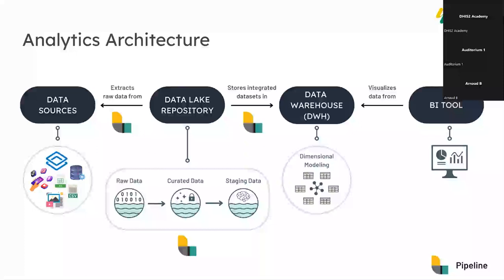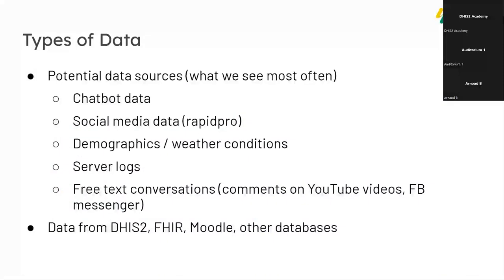The data warehouse — often called DWH — is populated through a pipeline and provides structure for the data, usually through dimensional data modeling. Once data is modeled in the DWH, it can be fed into a BI tool for visualization. The types of data commonly put into this repository include chatbot data, social media data, RapidPro data, demographics, weather conditions, server logs, free-text conversations — from YouTube comments to Facebook Messenger — as well as data from databases like DHIS2, FHIR, Moodle, Matomo, and more.